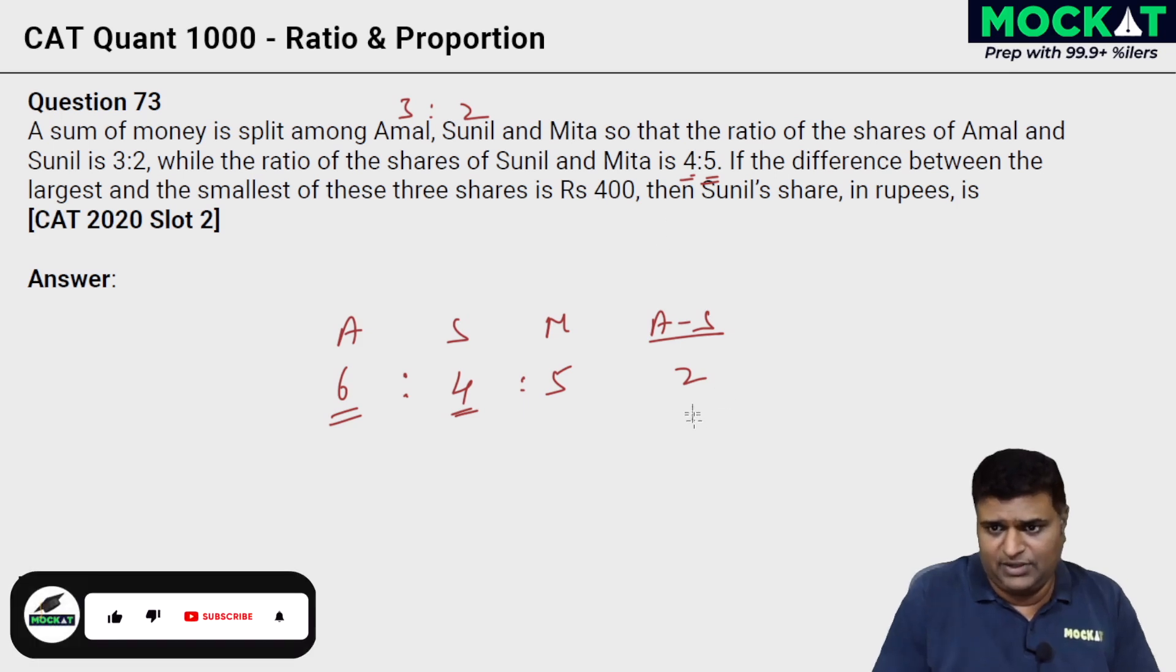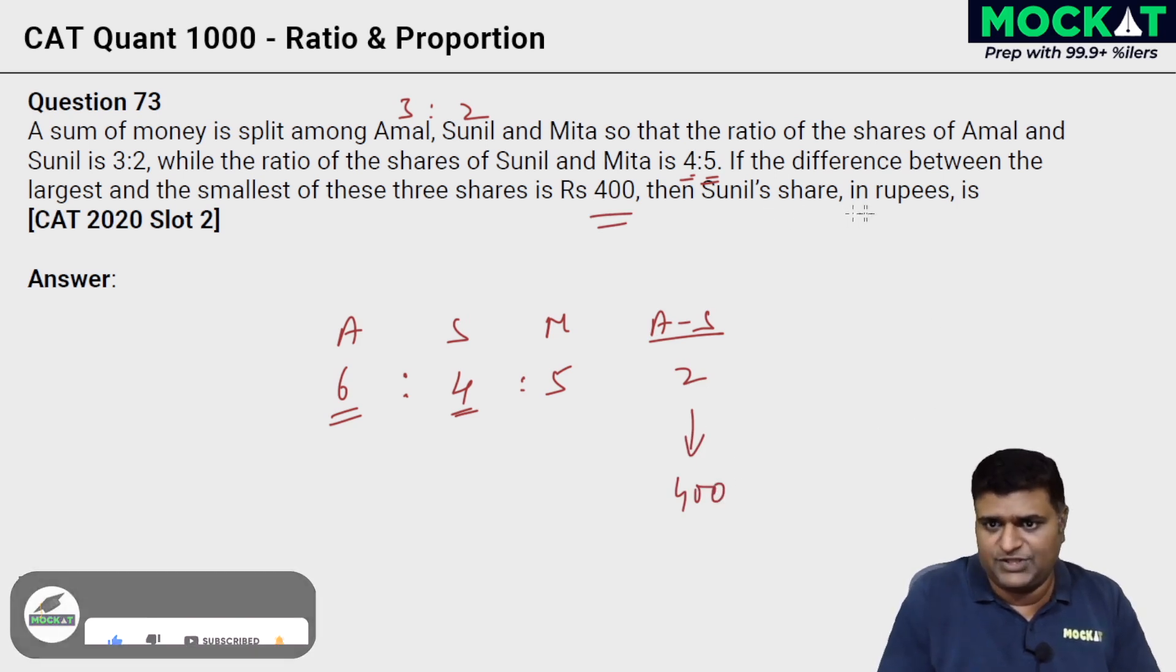And that has given us how much rupees? It's rupees 400. If 2 parts is 400, then Sunil's share is going to be what? 4 parts is twice of this, which comes to 800. And that becomes the answer for this question.